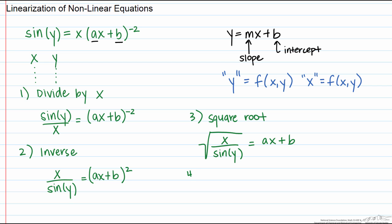And now what we can do is we can plot the square root of x over sine of y versus x. Our slope is going to be our a and our intercept is going to be our b.